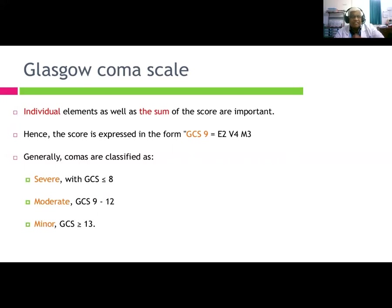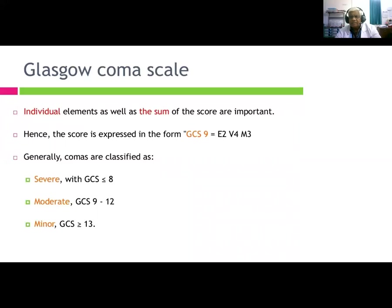In the Glasgow Coma Scale, individual elements as well as the sum are important; the score is expressed as, for example, GCS 9 = E2 V4 M3. Comas are classified as: severe — GCS less than 8; moderate — GCS 9 to 12; minor — GCS more than 13.